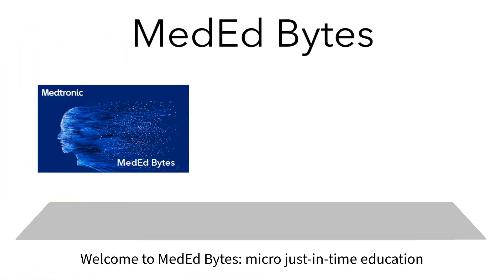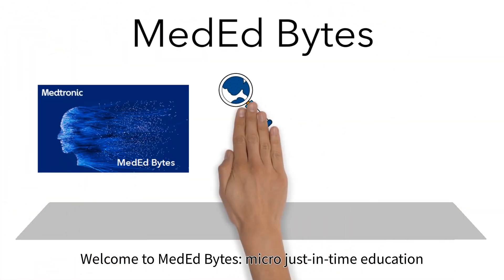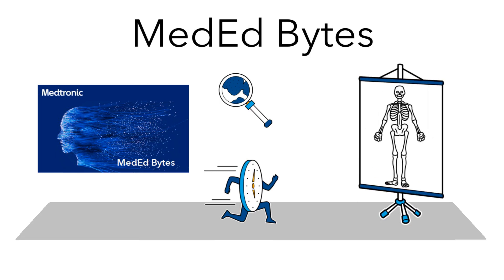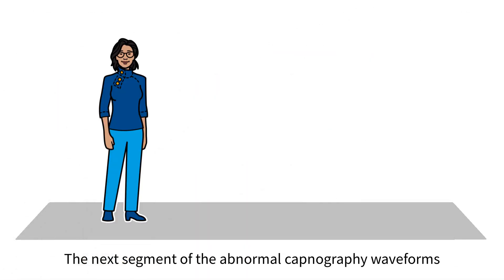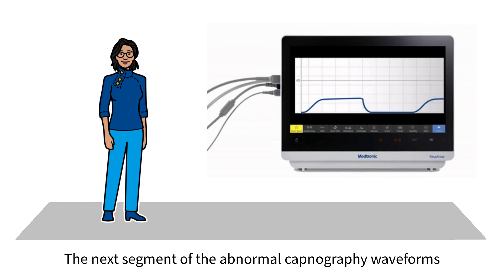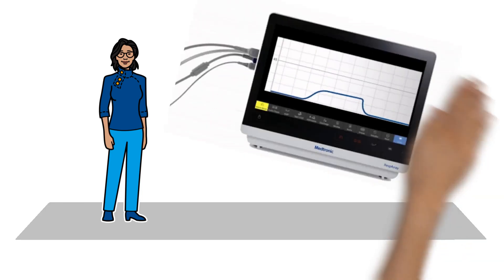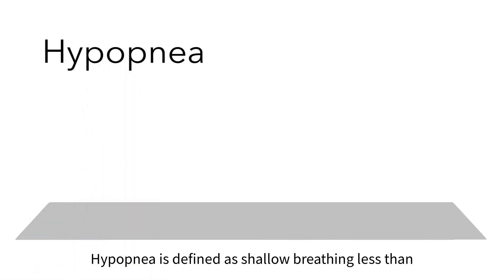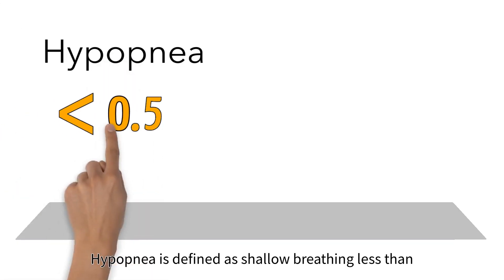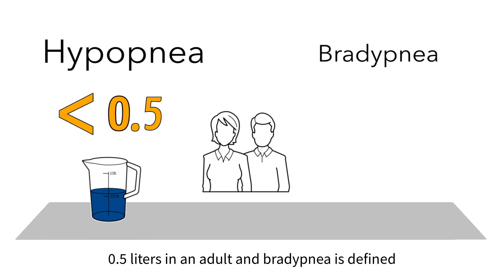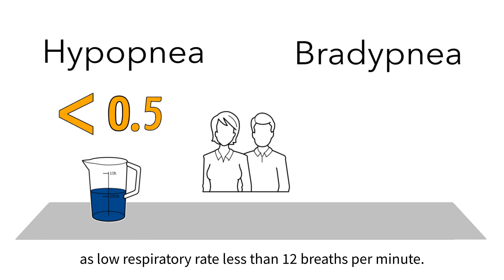Welcome to MedEd Bites Micro, just-in-time education. The next segment of the abnormal capnography waveforms is hypopnea with bradypnea. Hypopnea is defined as shallow breathing, less than 0.5 liters in an adult, and bradypnea is defined as low respiratory rate.